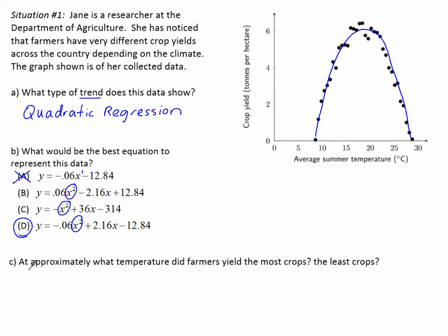Part C. At approximately what temperature did the farmers yield the most crops? Let's answer that before we get to the second question. The most crops. Well, the y-axis tells us about the crop yield. So where is the highest point? Right about here. At what temperature is that approximately? Kind of between 15 and 20, but closer to 20. So a little bit around 18 degrees Celsius.